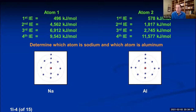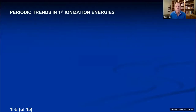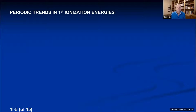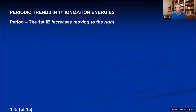Now we focus on trends for first ionization energies across the periodic table — removing only one electron from each atom. Moving from left to right across a period, the energy needed to pull the first electron off increases. The first ionization energy increases moving to the right. The two key factors explaining periodic trends are nuclear charge and shielding.